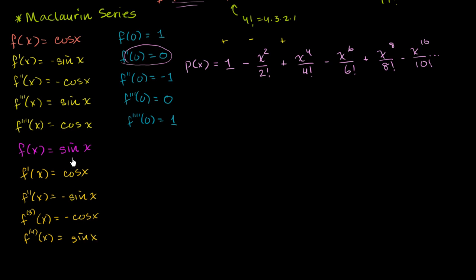So you see, just like cosine of x, it kind of cycles after you take the derivative enough time. And we care, in order to do the Maclaurin series, we care about evaluating the function and each of these derivatives at x is equal to 0. So let's do that.